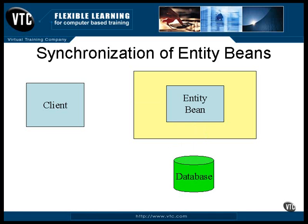When an entity bean is finished with its job, it doesn't go out of existence the way session beans do. Its instance is stored in a bean cache and could be used again. The next time an entity bean of this type is needed, it's pulled out of the cache and loaded with the appropriate data. This means that the same entity bean may represent one set of data one time and another set of data the next time.